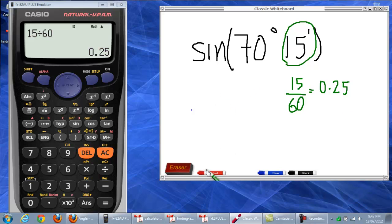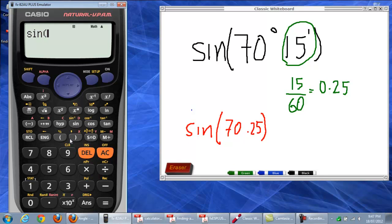So, this becomes then sine 70.25. And the answer should be 0.9412. Why did we go 2? Because the next number is over 5.